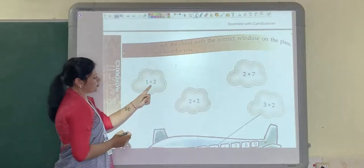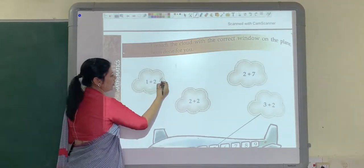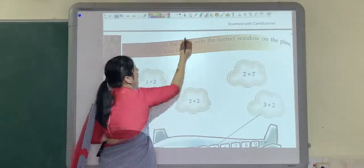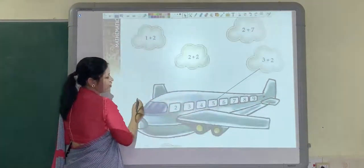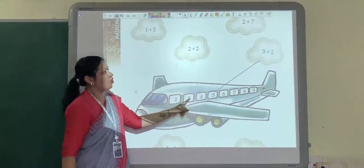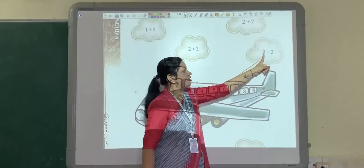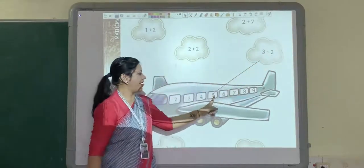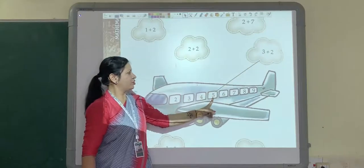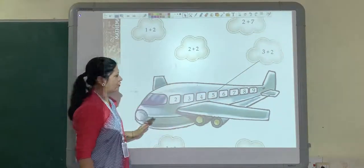See, 1 plus 2 is equal to 3. So what you have to do now? First you have to add all this. You have to add and then match with the window. One is given to you. See, 3 plus 2 is equal to 5. So you will match 5 to here. So like this, all others also you have to solve.